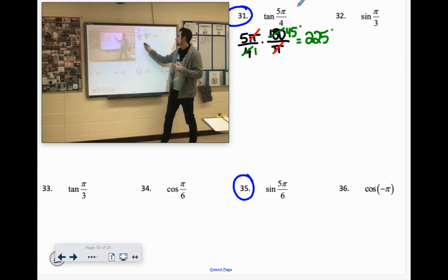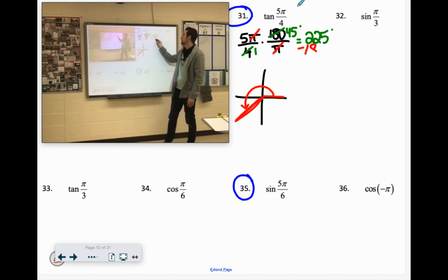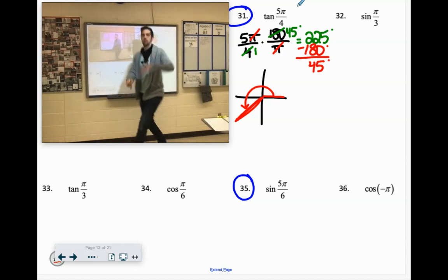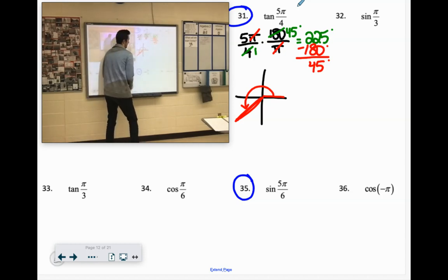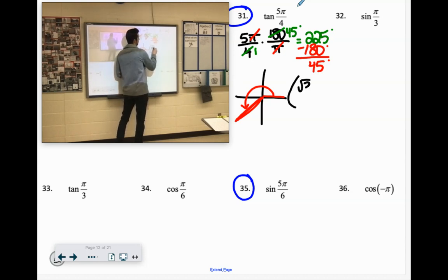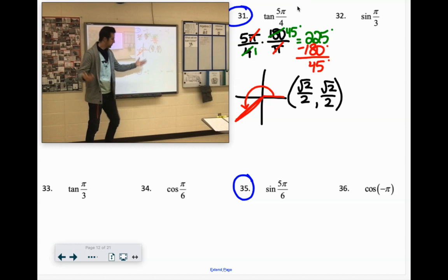So let's kind of picture that in our brain. It would go beyond 180 degrees. So if you're looking for the reference angle, you could do 225 minus 180, which leaves us with a reference angle of 45 degrees. So both coordinates are root 2 over 2, but in quadrant 3 they're both negative.